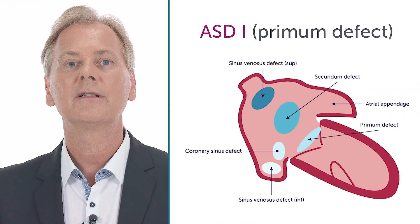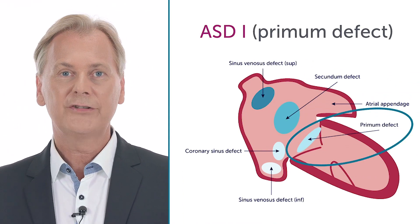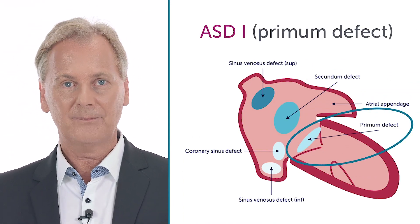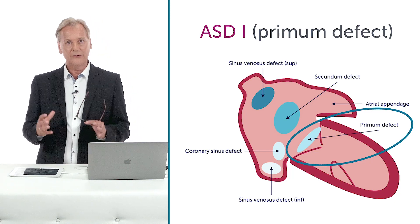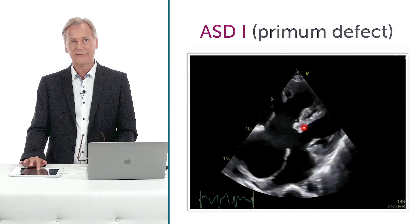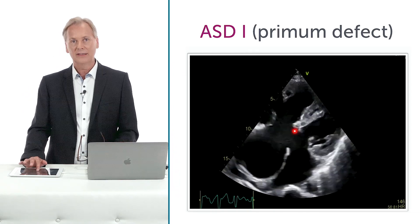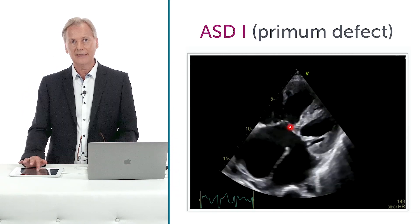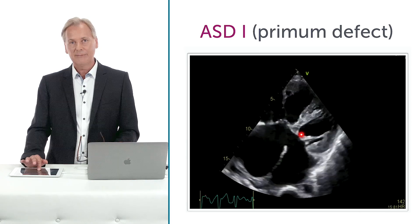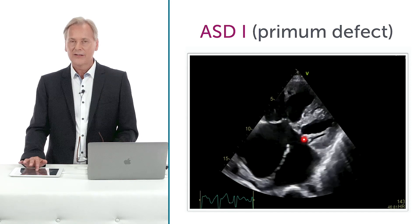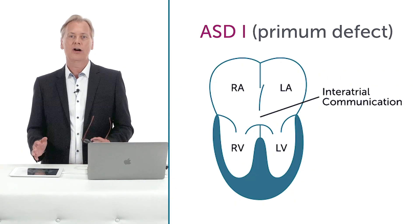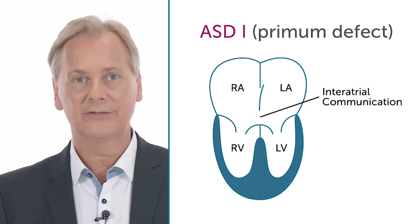Now, let's turn to a different form of atrial septal defect — the so-called atrium primum defect, which is a little bit of a different defect also in the way it develops embryologically. The typical feature on the echocardiogram is that you do not have any residual intra-atrial septum at the level of the AV valves, but that the defect is right close to where these valves are. So in reality, what we have here is a so-called endocardial cushion defect.